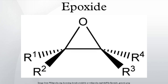A polymer formed by reacting epoxide units is called a polyepoxide or an epoxy. Epoxy resins are used as adhesives and structural materials. Polymerization of an epoxide gives a polyether; for example, ethylene oxide polymerizes to give polyethylene glycol, also known as polyethylene oxide.